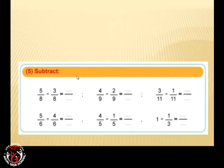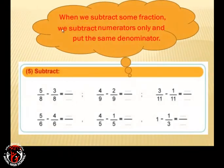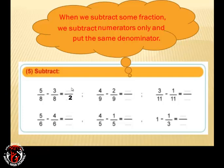Now we will subtract fractions. Remember: when we subtract fractions, we subtract numerators only and keep the same denominator. 5 over 8 minus 3 over 8: 5 minus 3 equals 2, and the denominator stays 8 — we do NOT subtract the denominators. 8 minus 8 equals 8, not 0. So the answer is 2 over 8.